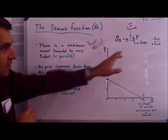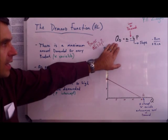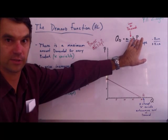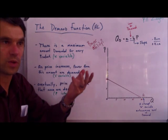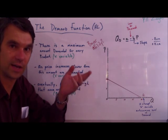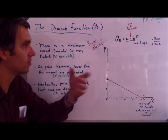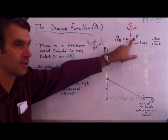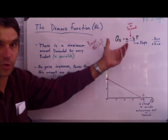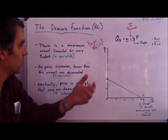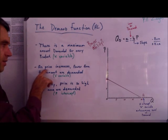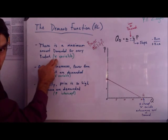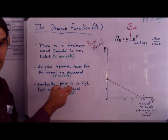We need to understand that in the formula, quantity demanded equals a maximum amount minus something to do with price. Remember, when price goes up, quantity demanded declines. So 'b' is going to tell us how much, for every one unit change in price, how much we lose of quantity demanded. As price increases, fewer than the maximum amount — fewer than the 'a' variable — will be demanded.